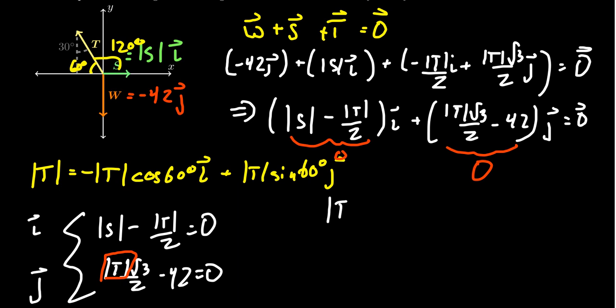We get the tension times the square root of 3 over 2 is equal to 42. Times both sides by 2, we get the tension times the square root of 3 is equal to 84.